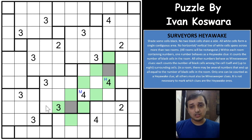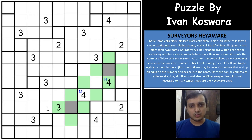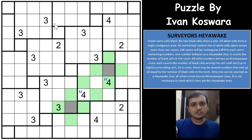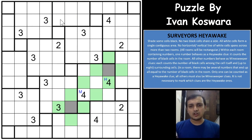I missed one important rule here — in a Heyawake puzzle, the shaded cells cannot touch each other orthogonally. When you shade a cell, all 4 orthogonally adjacent cells will have to be unshaded. Two shaded cells cannot touch each other — that is what the Heyawake rule says. In a Minesweeper rule you could have such a case, but in this puzzle you cannot have 2 shaded cells touching each other, even for the Minesweeper clue.